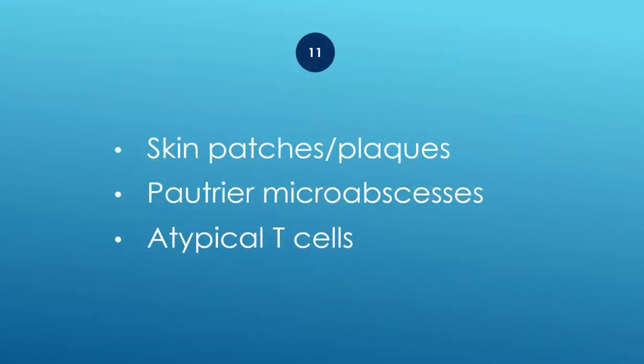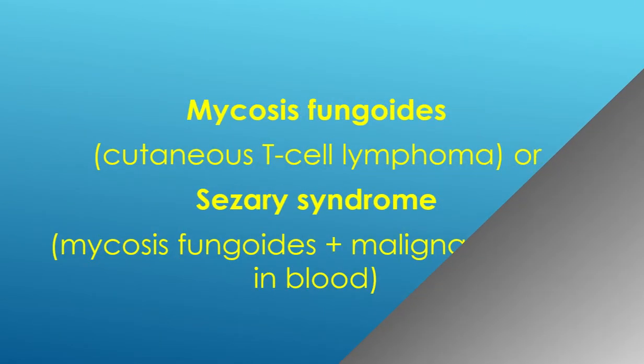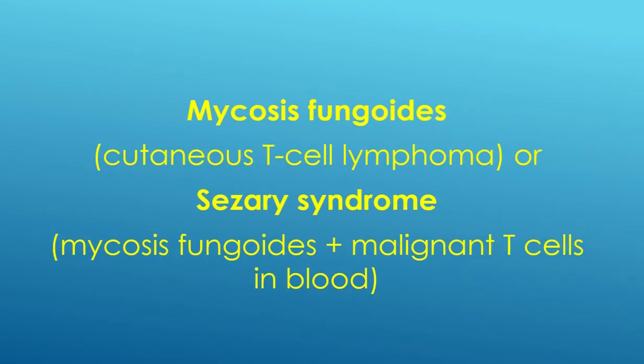Skin patches or plaques, Pautrier microabscesses, and atypical T-cells — Disease 1: Mycosis fungoides, cutaneous T-cell lymphoma. Or disease 2: Sézary syndrome — mycosis fungoides plus malignant T-cells in the blood.